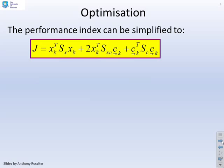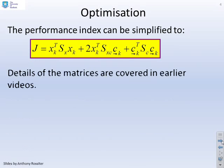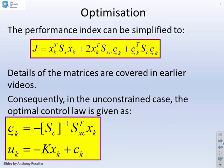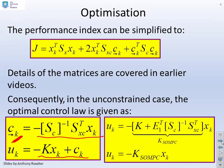Optimisation. The performance index can be minimised or reduced to this form, which we've covered in detail. Consequently, in the unconstrained case, you can find that the optimising C future is given by this formula, and the optimal feedback law is given by this form. If we combine those two together, you can form this feedback parameter, which I'm going to call KSOMPC, and that's your optimised feedback law.